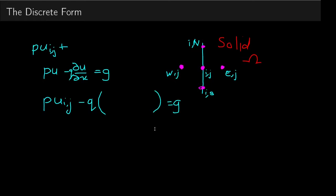So the discrete form reads, so you have P, U, I, J. Now this is where you have the central difference equals G. So this is simply U at the east minus U at the west, divided by distance between these two points. Again, this is the ghost value.